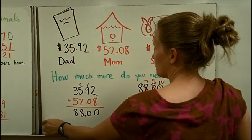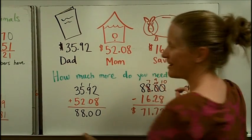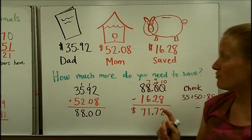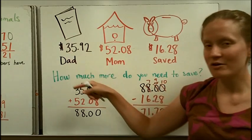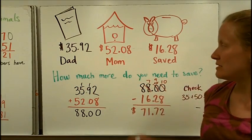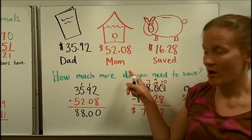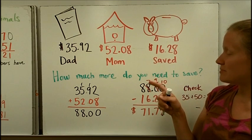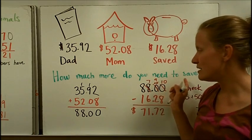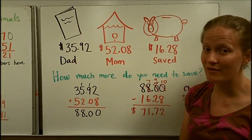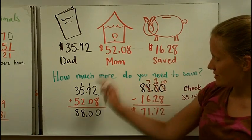Let's look at an example that uses what we've learned so far. Let's pretend that you want to buy a book for your dad. Maybe you're buying Christmas presents and you want to buy a birdhouse for your mom. You have already saved up $16.28. The question is, how much more do you need to save to be able to buy these presents?